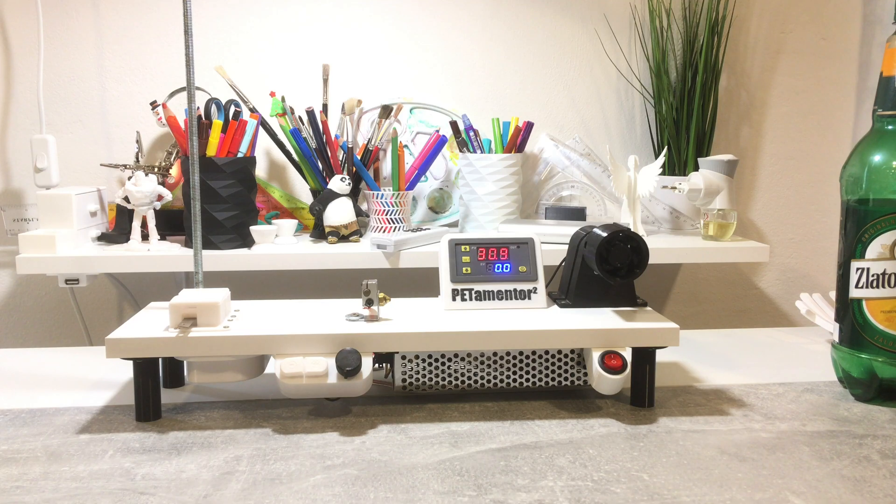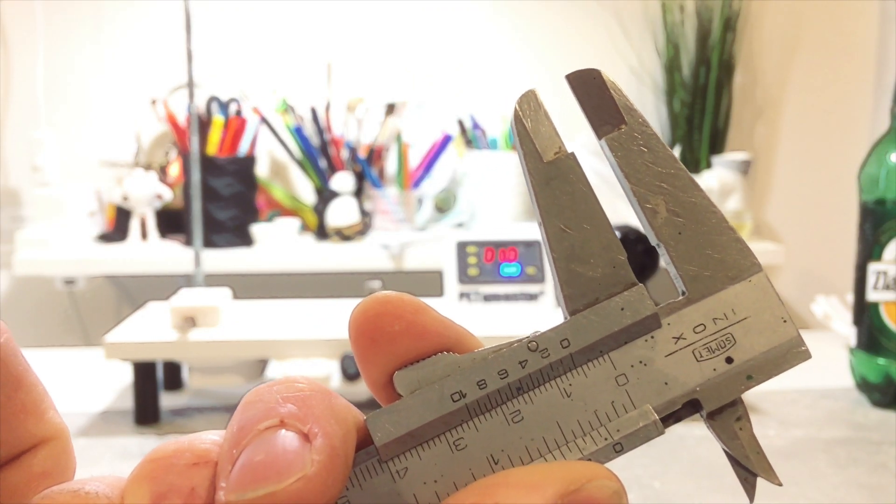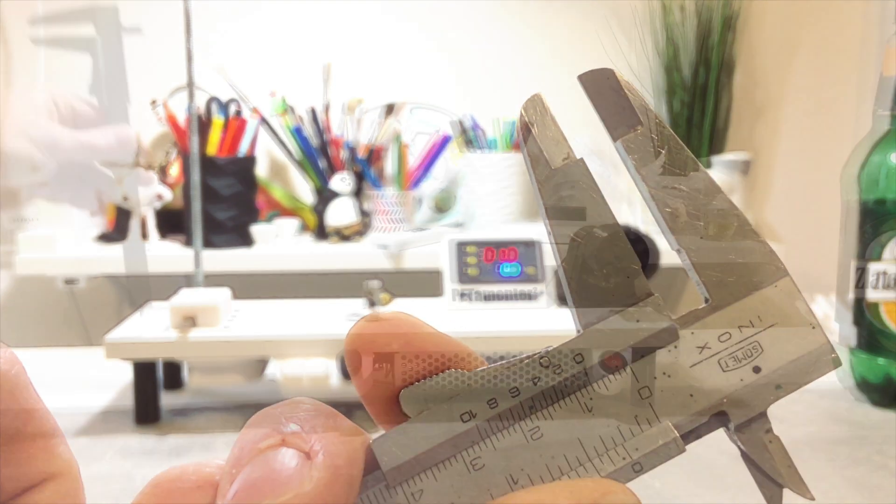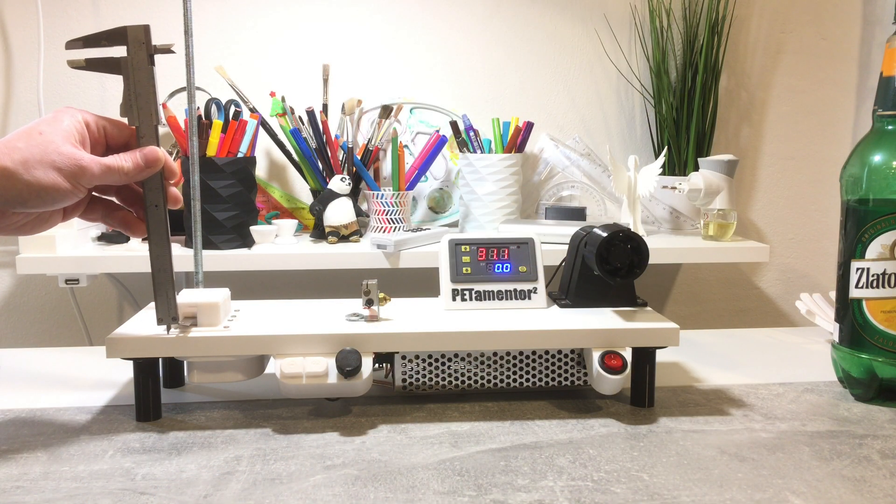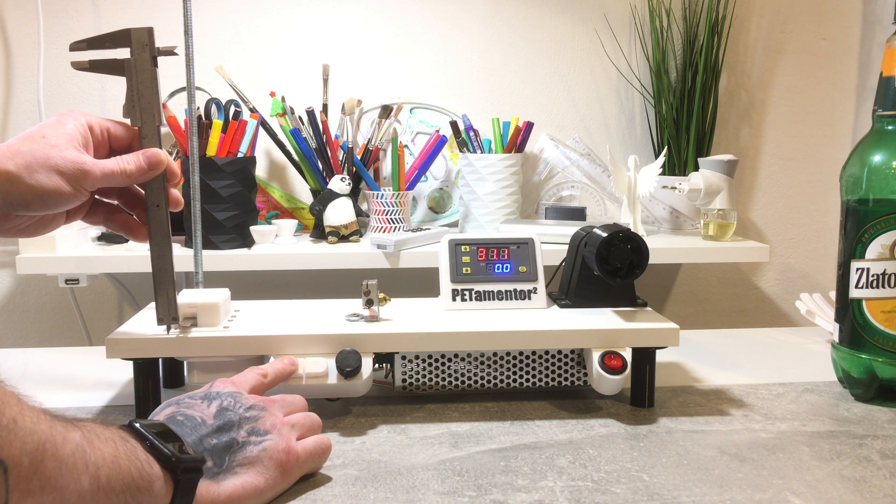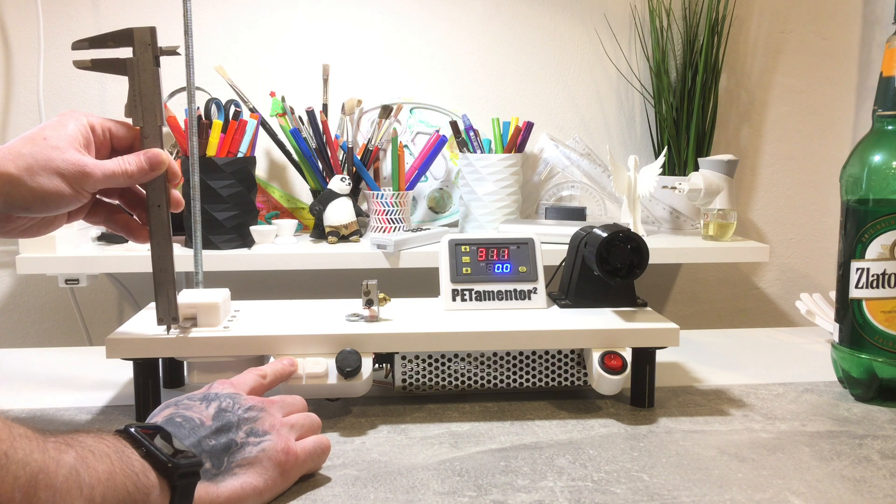Hi guys, this video is about operating the Petamenter Mark 2 and some recommendations. I'm starting with 7mm strip width. You have to start with a thinner strip and then you can scale it up on the run to make fully connected filament all the way.